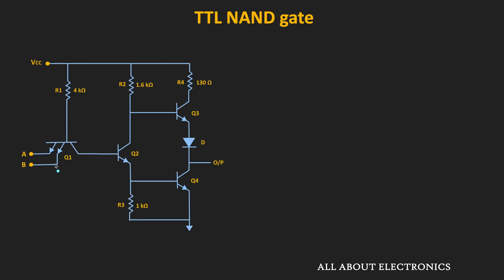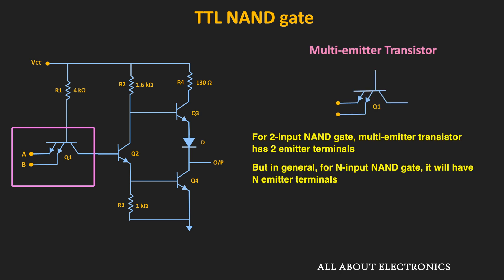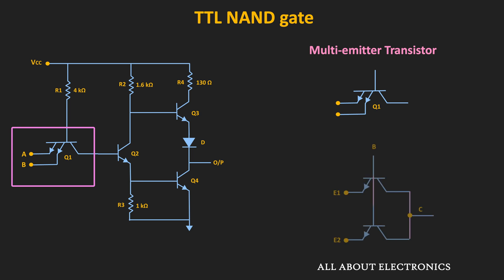The circuit of the NAND gate is very similar to the inverter circuit, but here the first transistor is the multi-emitter transistor. As its name suggests, this multi-emitter transistor has two emitter terminals. That means if we have two transistors and their base and collectors are connected together, then the two emitter terminals will behave as the multi-emitter transistor.